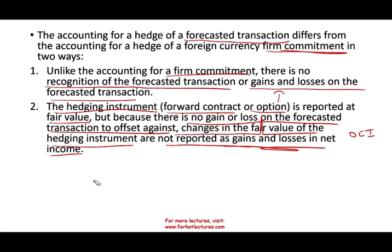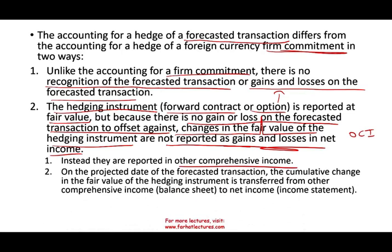Hopefully as you understand this, it's starting to make sense. The changes are reported in OCI — other comprehensive income. On the projected date, which is when the transaction is settled, the cumulative change in the fair value of the hedging instrument is recycled — transferred from other comprehensive income to the income statement. So eventually it's going to hit the income statement, but first it stays in OCI until that transaction is settled. We call this the projected date, or the settlement date.